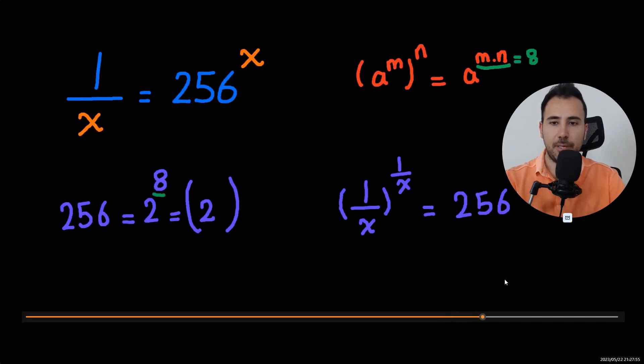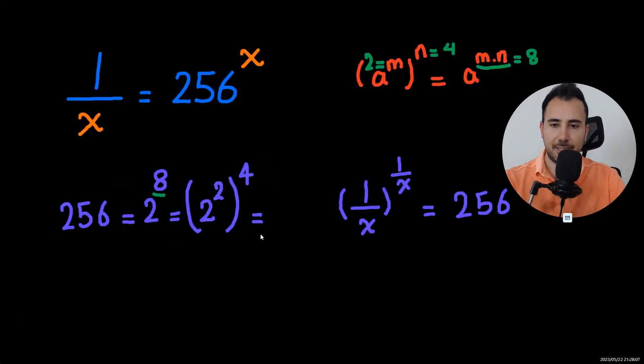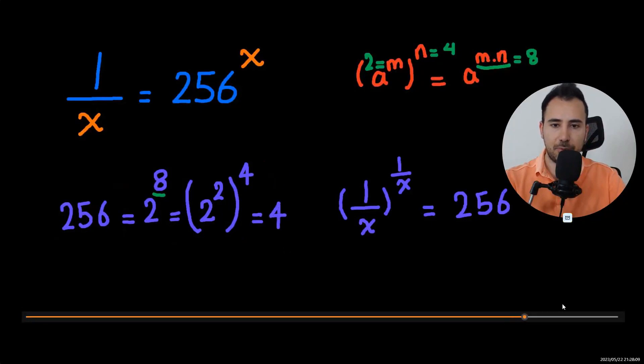But why do I do it? So 2 is here, 4 is out. I do it because 2 to the second power is 4. So all of this becomes 4 to the fourth power.